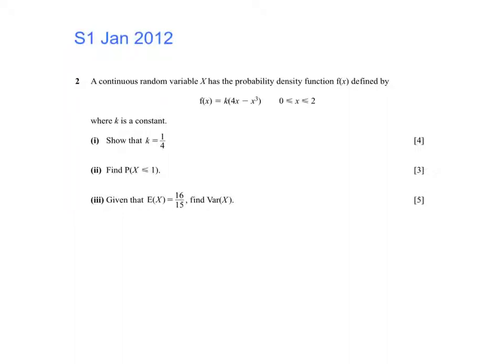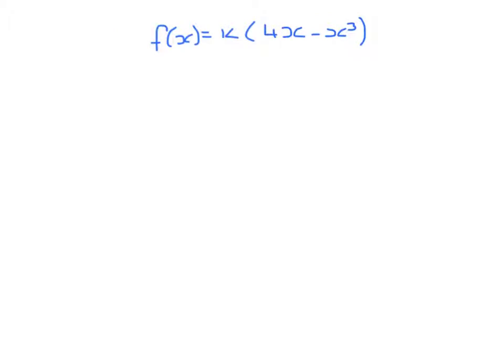S1 January 2012, question 2, continuous random variable. To find k we're going to use the fact that if you sum probabilities you must get 1.